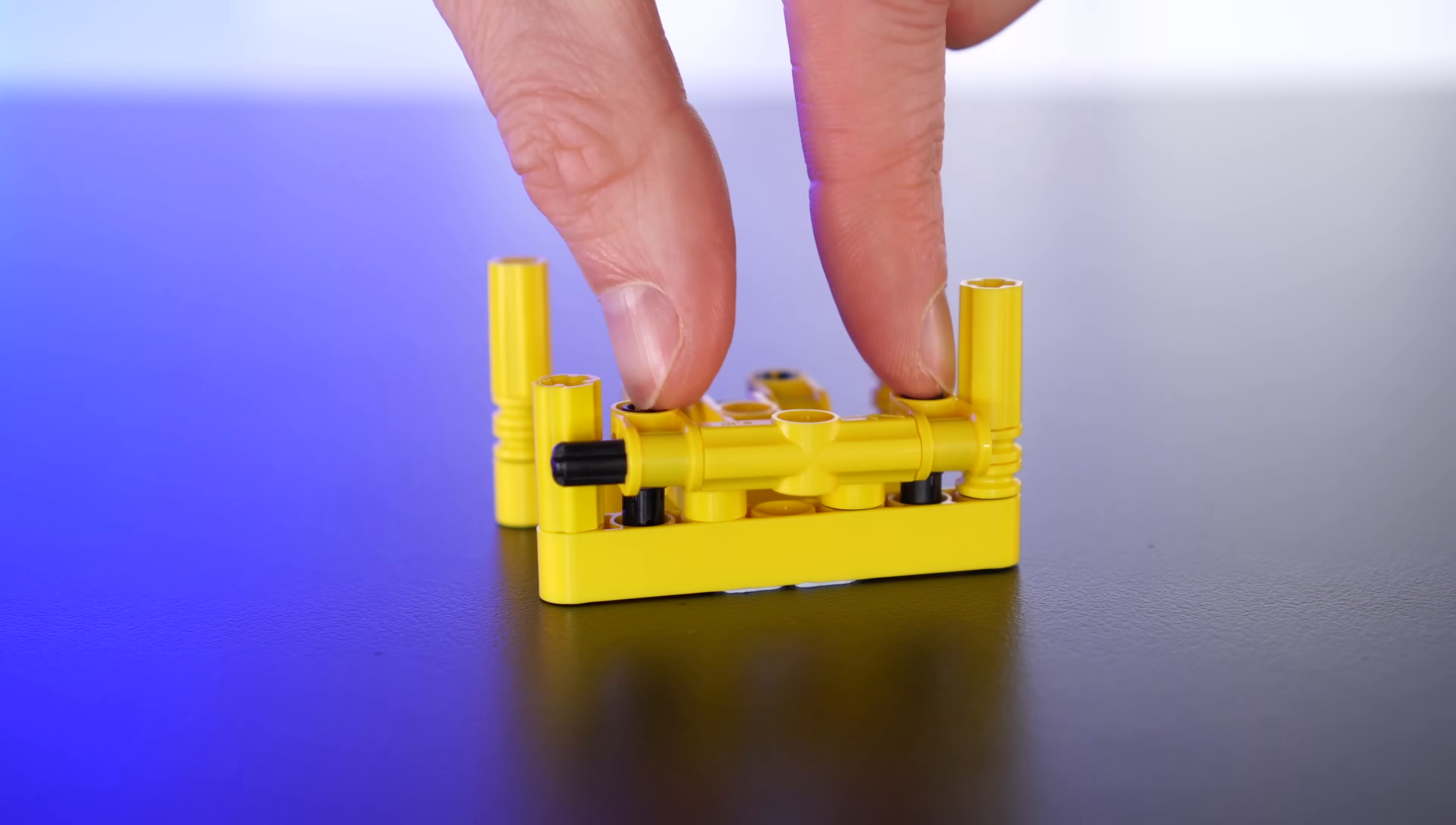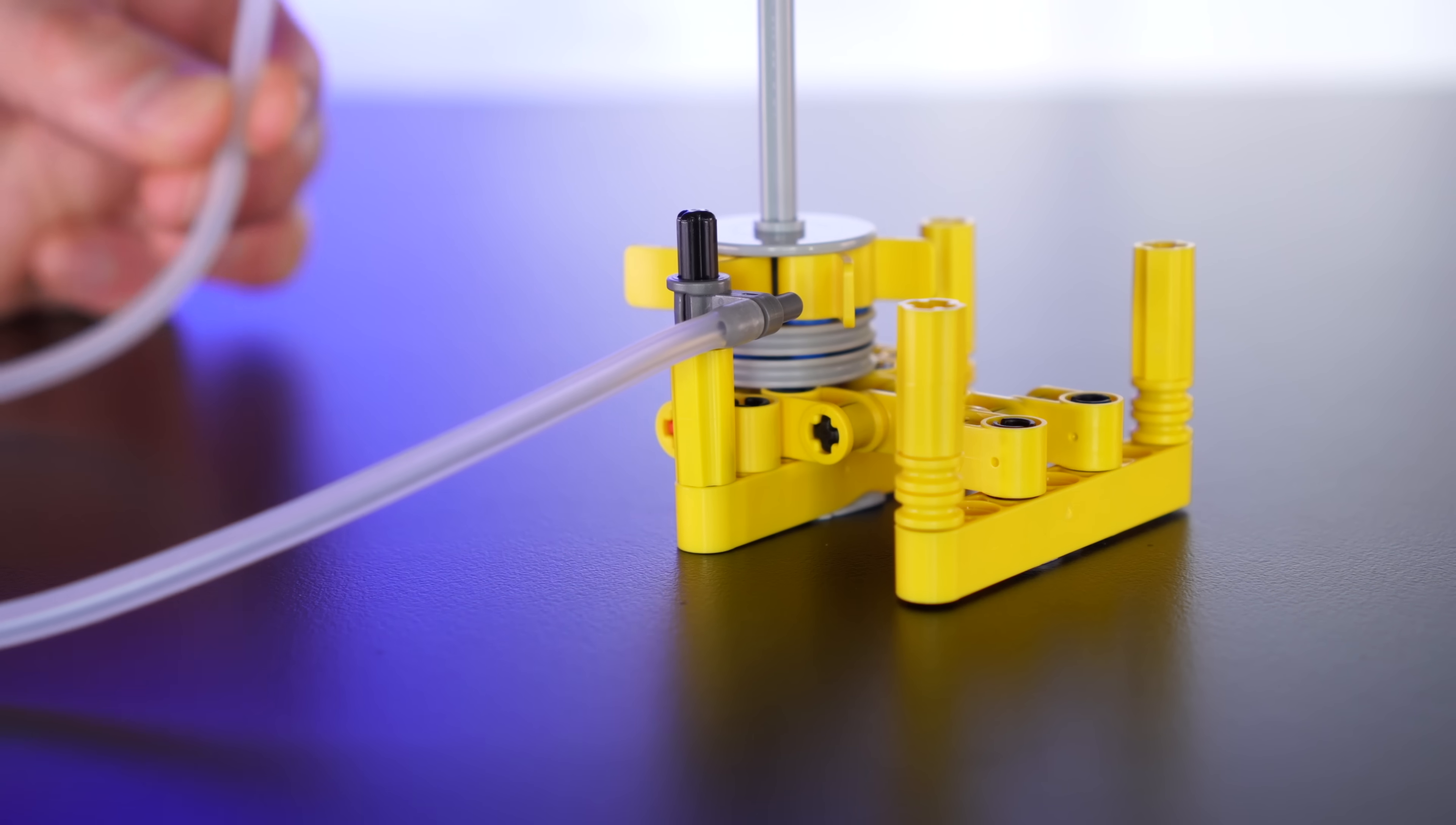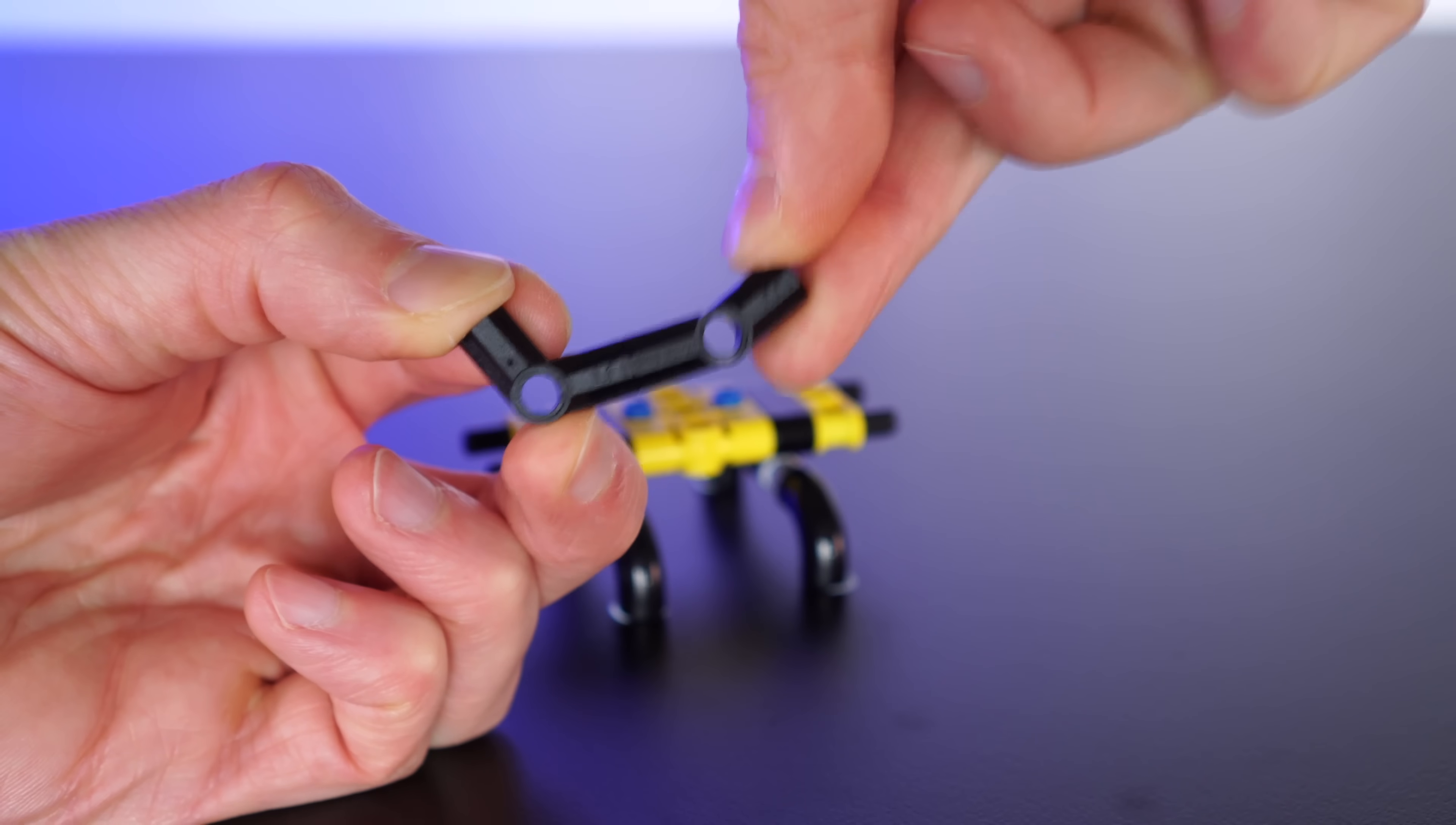Our turbine will sit in the base over here, and our first intake will mount here. Even though I can barely blow through this thin hose, it's still surprisingly enough to spin the turbine.